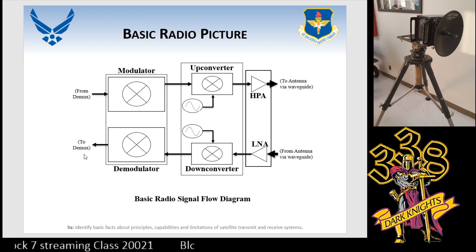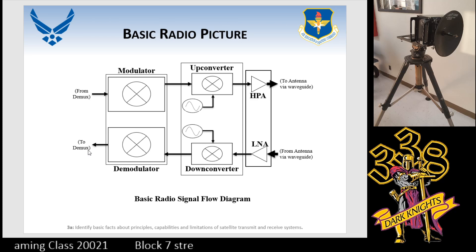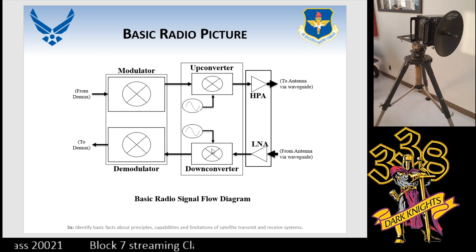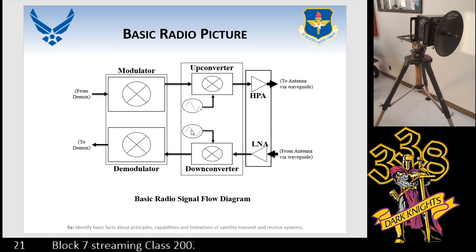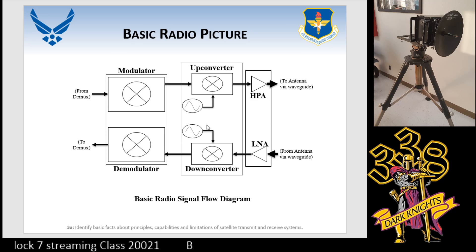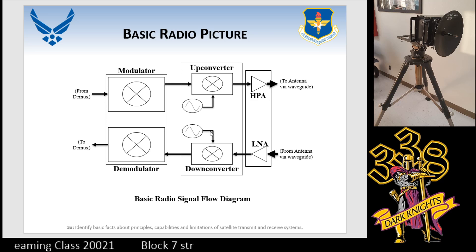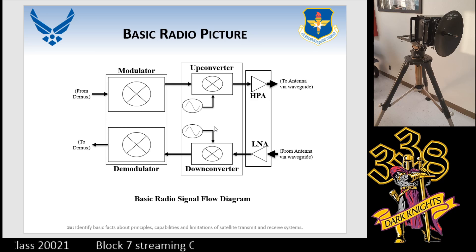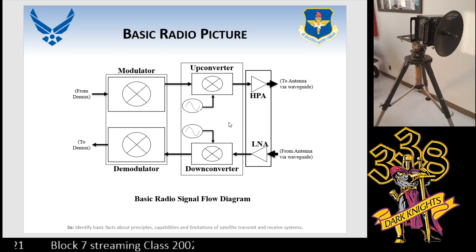Looking at the concepts a little bit deeper, on the transmit side you have the modulator, up converter, and HPA. You'll notice there's a wavy signal connected to the up converter as well as the down converter — that's your oscillators. It's going to take that signal and either bring it to the RF level or bring it down to the IF level, depending on whether you're in transmit or receive.